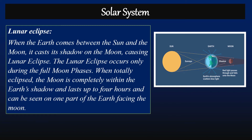Lunar eclipse: When the earth comes between the sun and the moon, it casts its shadow on the moon, causing a lunar eclipse. The lunar eclipse occurs only during the full moon phases. When totally eclipsed, the moon is completely within the earth's shadow and lasts up to four hours, and can be seen on one part of the earth facing the moon.